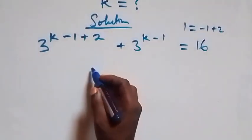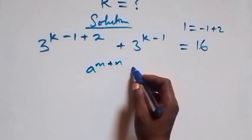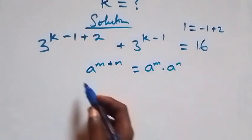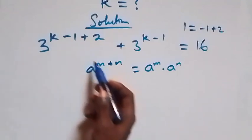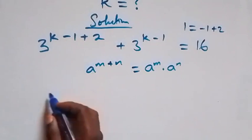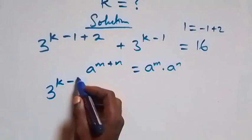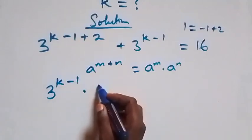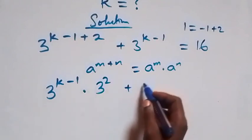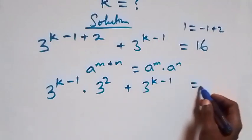Then apply the law of indices: a raised to power n plus n can be written as a raised to power n times a raised to power n. Here we treat k minus 1 as m and 2 as n, and what we have becomes 3 raised to power k minus 1 times 3 raised to power 2, then plus 3 raised to power k minus 1, equals to 16.